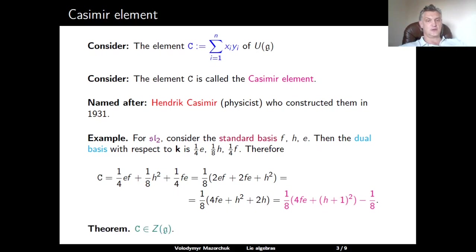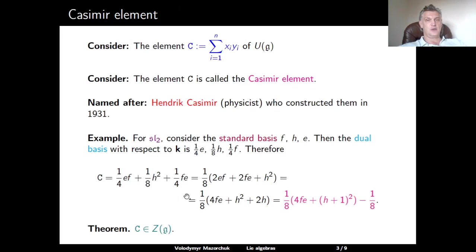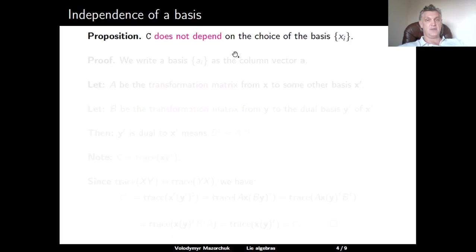The main theorem of today's talk is the fact that the Casimir element belongs to the center of the universal enveloping algebra. Before proving this theorem, let us discuss the independence of the Casimir element of the choice of a basis in G. If we look at the definition, we clearly see that C is defined as an expression of elements in a given basis. However, the claim is that this outcome does not depend on the choice of the basis.